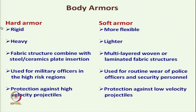Comparing both: hard armour is rigid, heavy, combines fabric with steel or ceramic plates, used for military officers in high-risk regions against high velocity projectiles. Soft body armour uses only multi-layered woven or laminated fabric structure, is more flexible and lighter, used for routine wear of police officers or security personnel, and effective for low velocity projectiles.